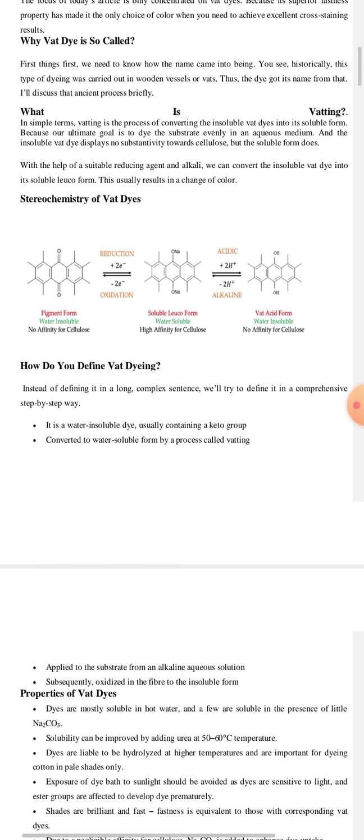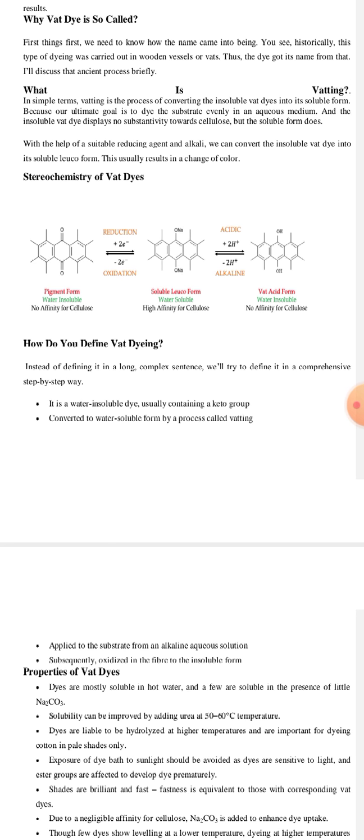Now, here you can see the stereochemistry of vat dyes. The left-hand structure is the pigment form of the vat dye which is water-insoluble and has no affinity for cellulose. When it reacts with hydrosulfite and sodium hydroxide, it will be reduced and converted into the middle figure, the soluble leuco form, which is water-soluble and has high affinity for cellulose. Then, this soluble leuco form will be applied on the substrate and when it is applied, it is again oxidized to its insoluble form.